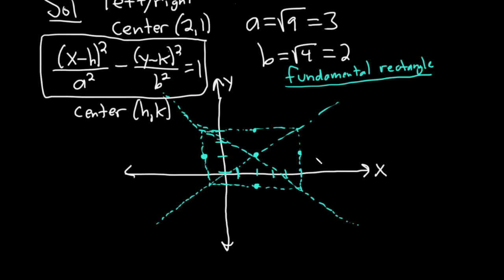This point here is called the vertex, and so is this one. These are points on the hyperbola. Because it opens left and right, you just draw the curves like this. It's really beautiful. Even though it's not perfect, it makes me feel like a super artist. And that's a rough sketch of the graph of a hyperbola.